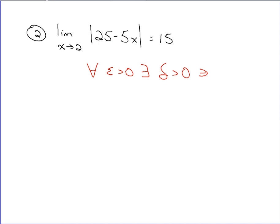As we try to prove that this limit works, we start with the absolute value of x minus whatever x is approaching. In this case, 2. We set that less than delta.